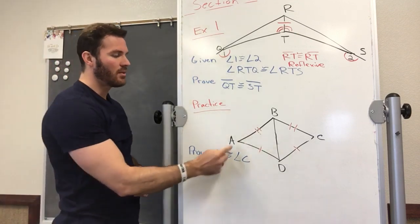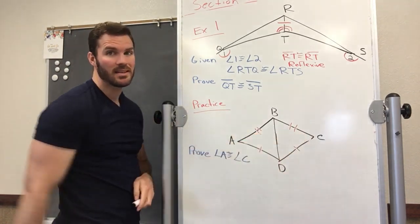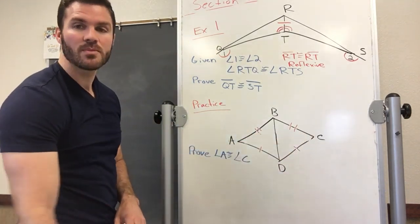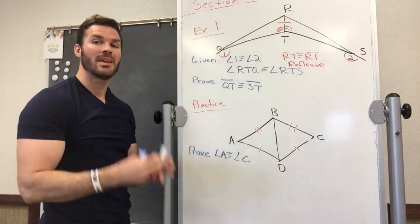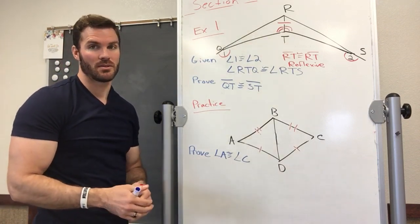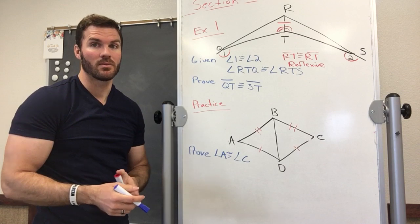We need to prove that angle A is congruent with angle C. So let's use all of our corresponding parts and try to figure out if we can make these triangles congruent to each other. Then everything will be corresponding.